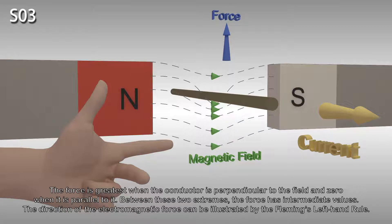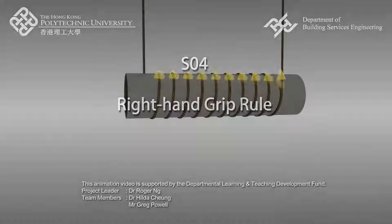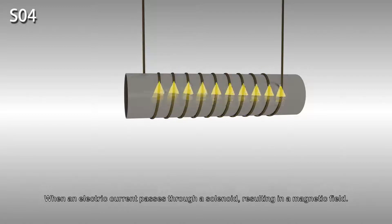The direction of the electromagnetic force can be illustrated by Fleming's left-hand rule. When an electric current passes through a solenoid, it produces a magnetic field.